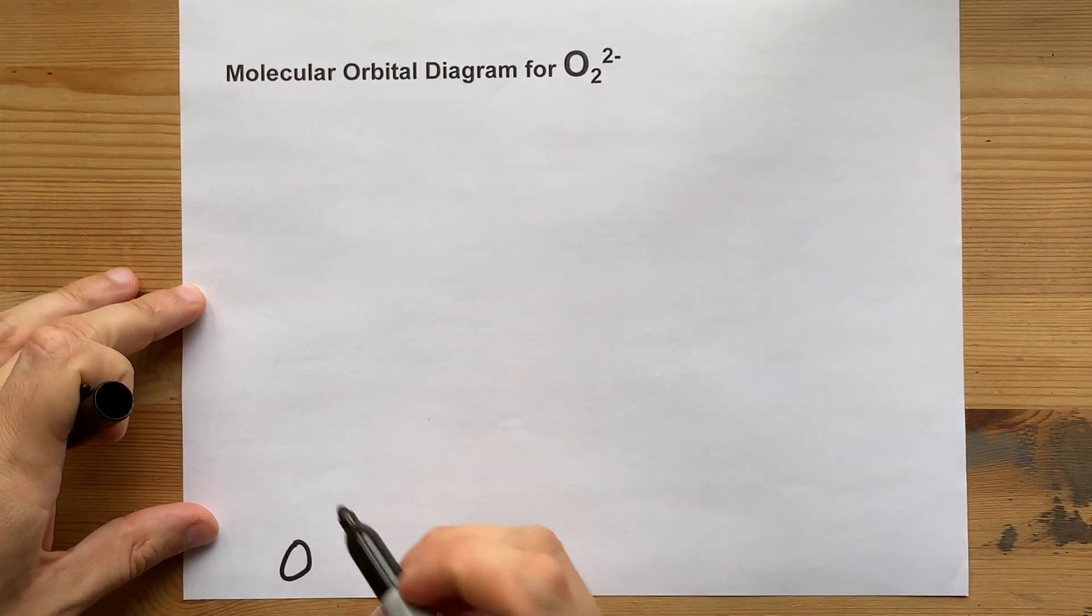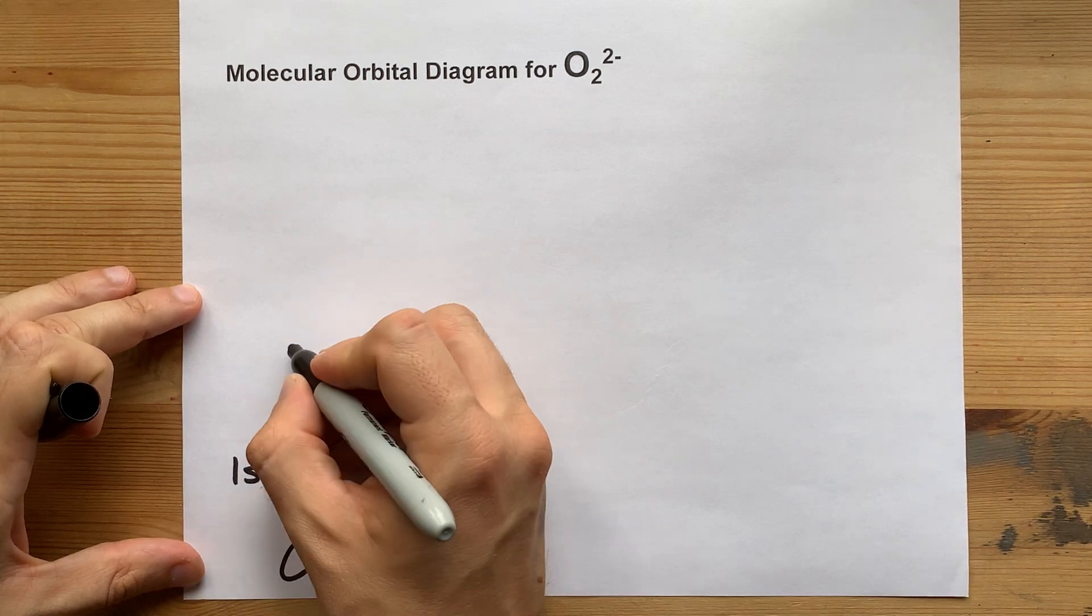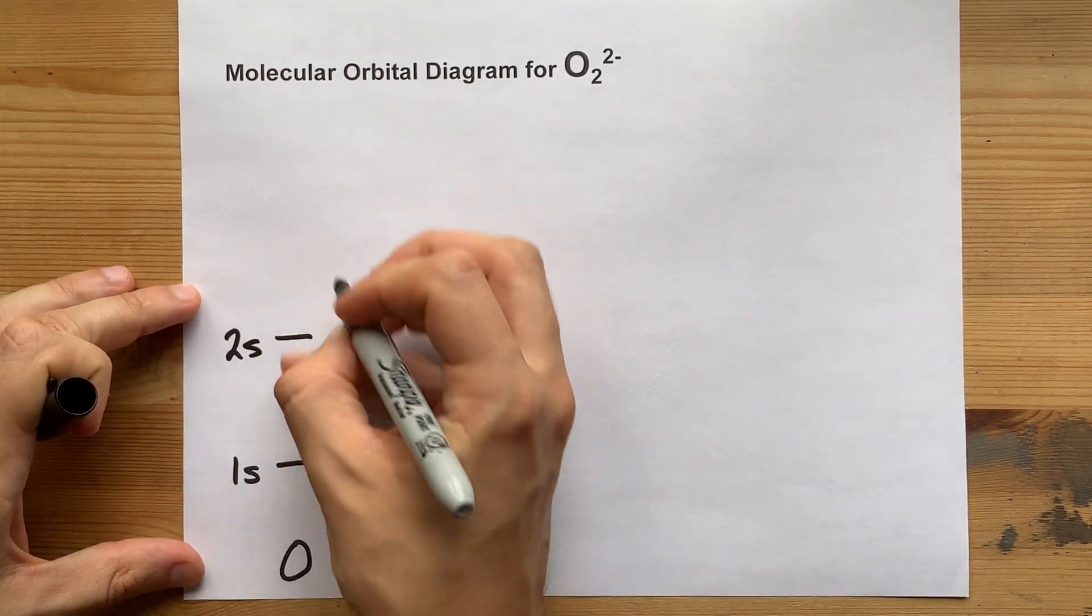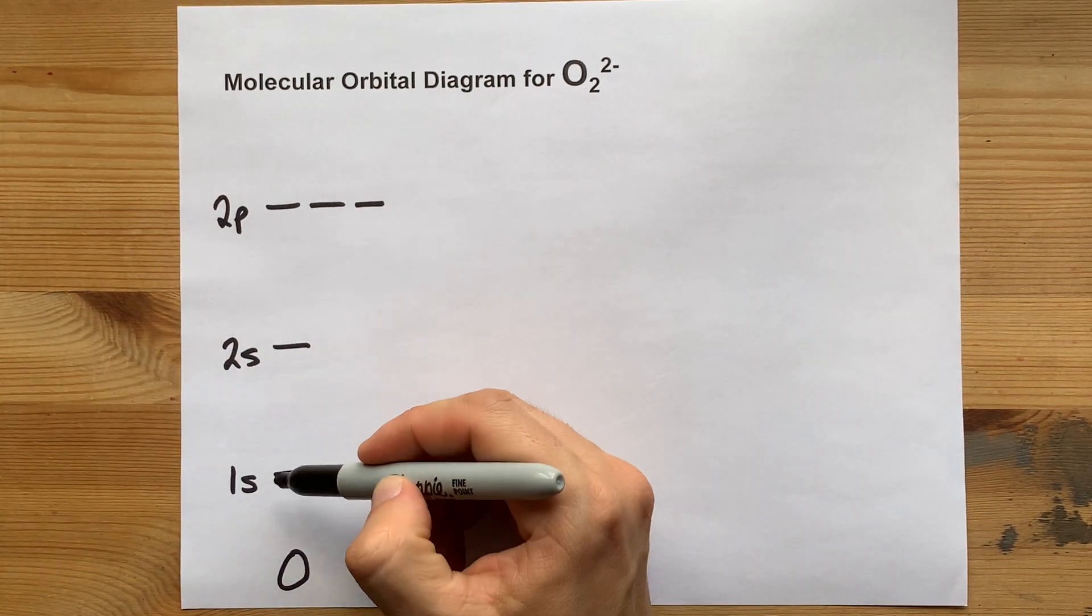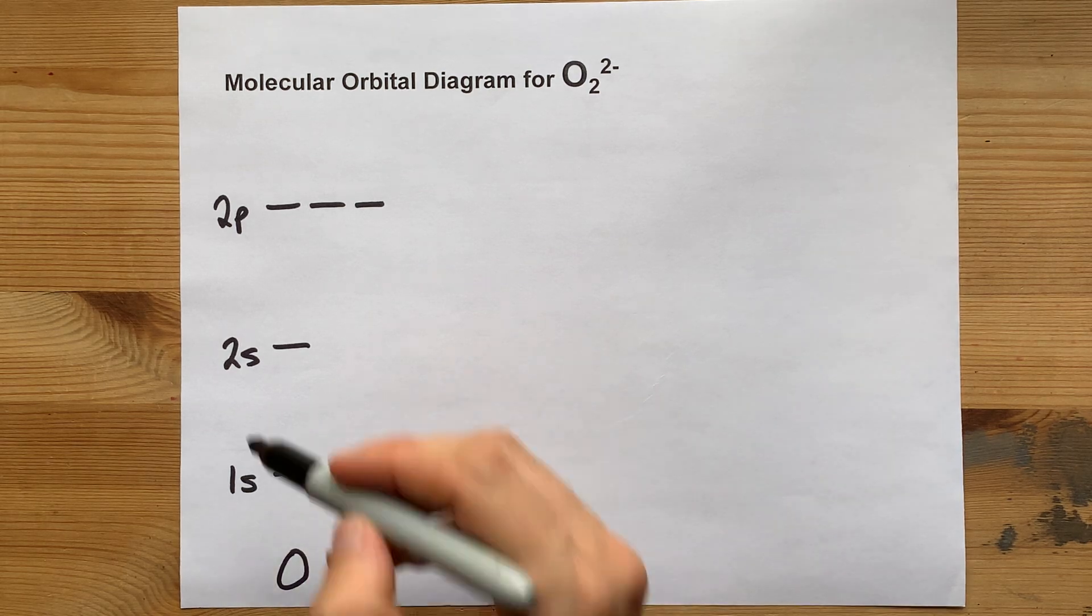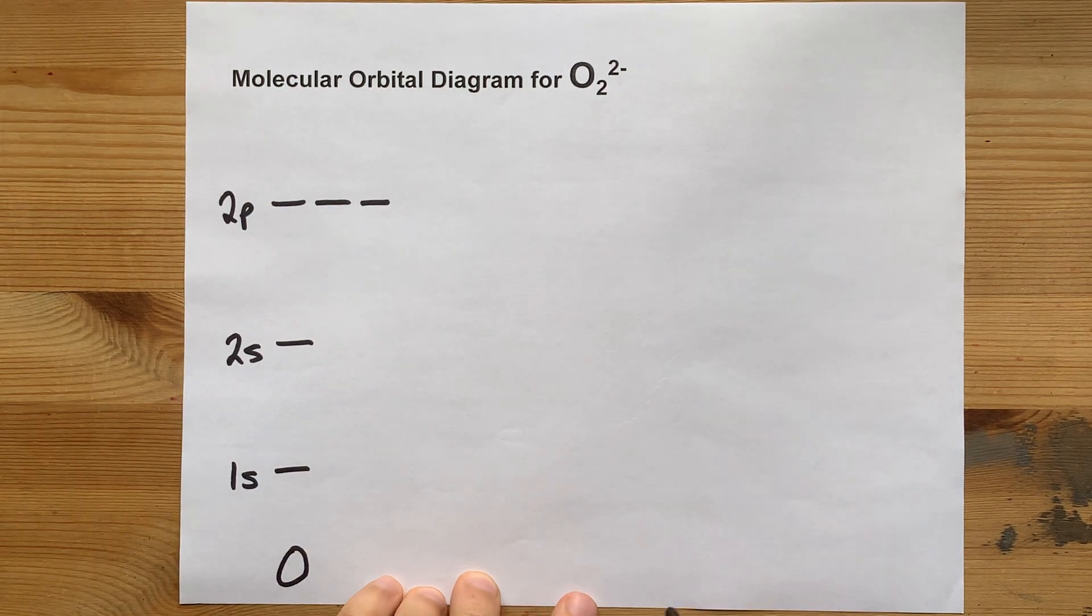An oxygen atom on its own has an electron configuration of 1s2, 2s2, 2p4, meaning that it has two electrons in the 1s subshell, two electrons in the 2s subshell, and four electrons in the 2p subshell.